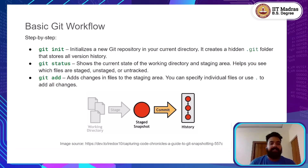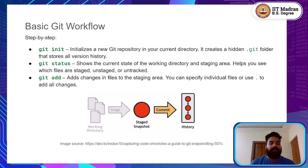Once your repository is initialized, you can check the status of your repository at any time using git status. This command shows the current state of your working directory and staging area. It tells you which files are untracked, which ones have changes that have been staged, and which ones are staged and ready to be committed. When you make changes to files and want Git to track those, you use the git add command, which moves your changes into the staging area, preparing them to be committed.